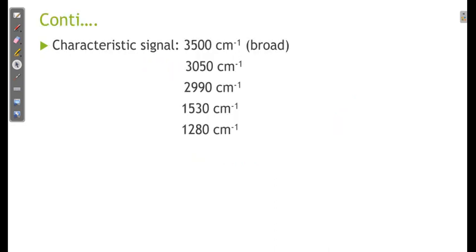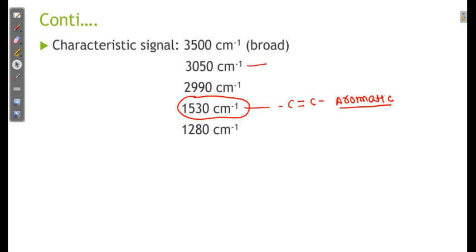Let us go ahead and see the given data. From the given spectral data, we can see a value that shows aromatic carbon-carbon stretching. This indicates carbon sp2-H, and another signal indicates carbon sp3-H. So one could be a CH3 and one could be a carbon double bond H. There is also a broad signal around 3500, which confirms that it is an OH group.